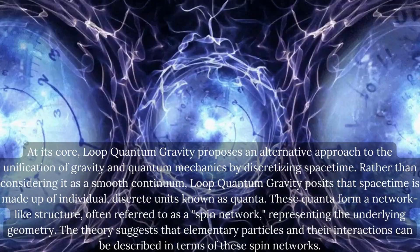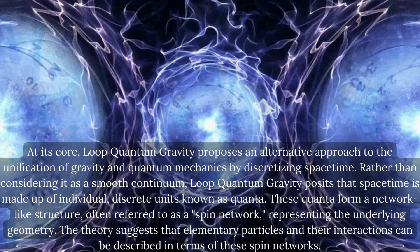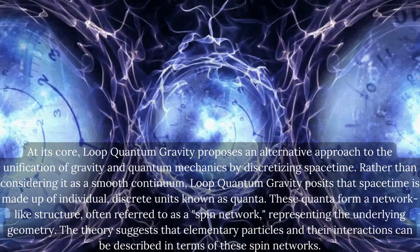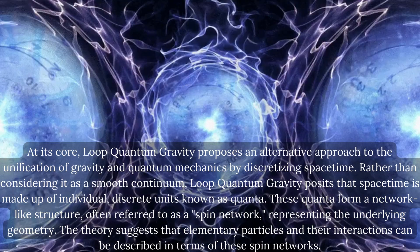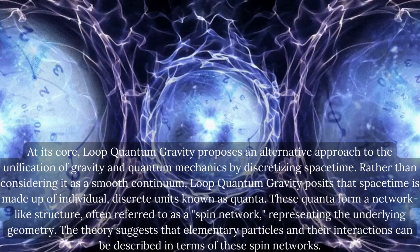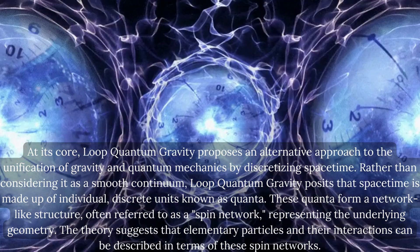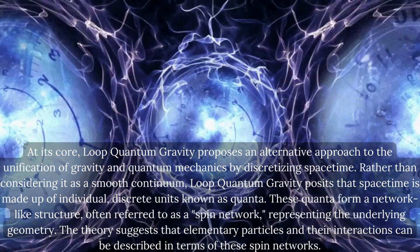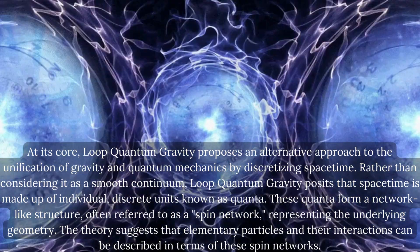At its core, loop quantum gravity proposes an alternative approach to the unification of gravity and quantum mechanics by discretizing spacetime. Rather than considering it as a smooth continuum, loop quantum gravity posits that spacetime is made up of individual, discrete units known as quanta.